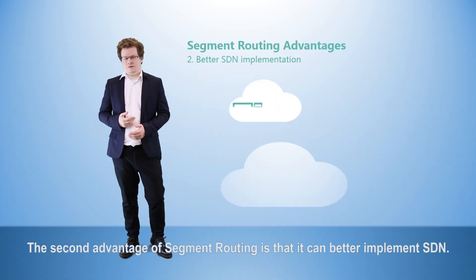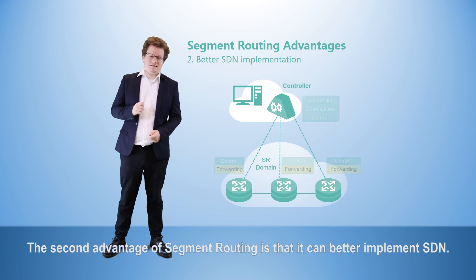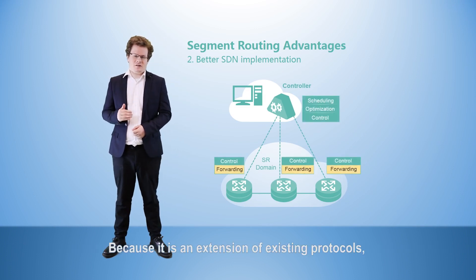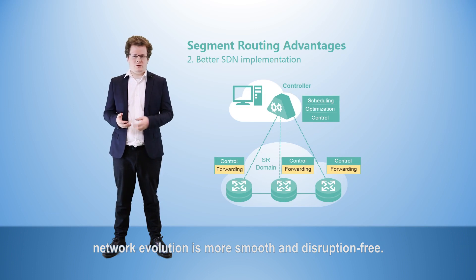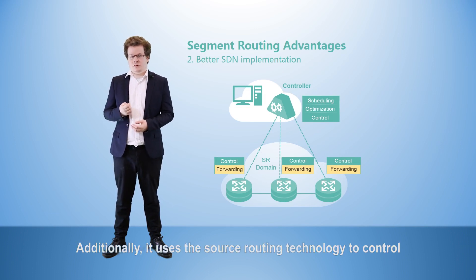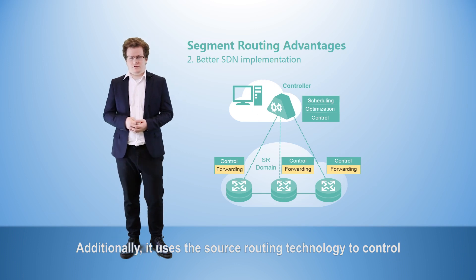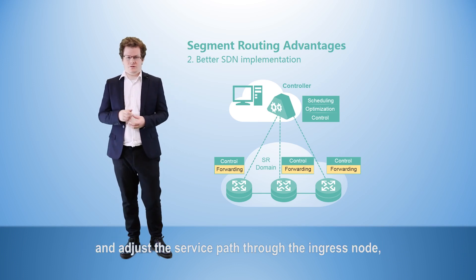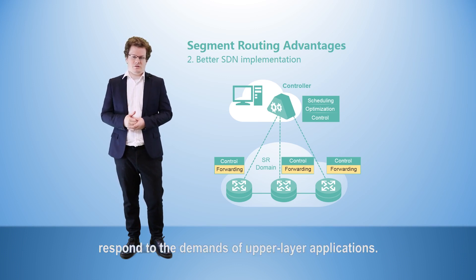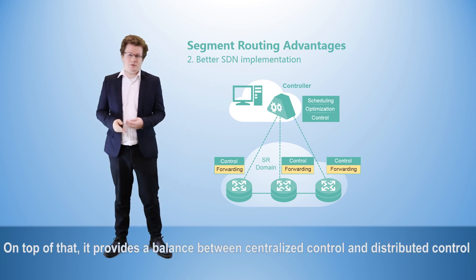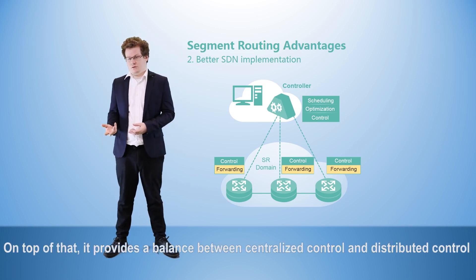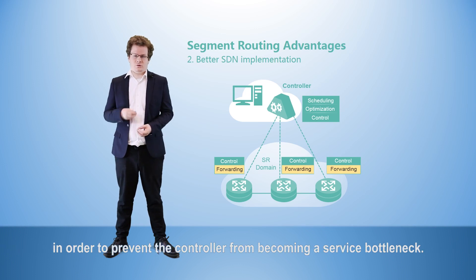The second advantage of segment routing is that it can better implement SDN. Because it is an extension of existing protocols, network evolution is more smooth and disruption-free. Additionally, it uses source routing technology to control and adjust service paths through the ingress node, enabling the network to more quickly respond to the demands of upper layer applications. On top of that, it provides a balance between centralized control and distributed control in order to prevent the controller from becoming a service bottleneck.